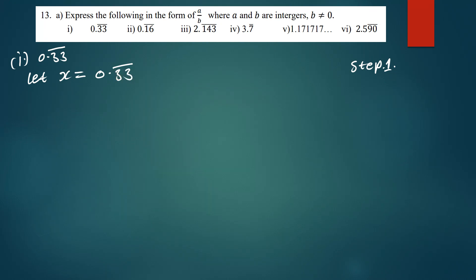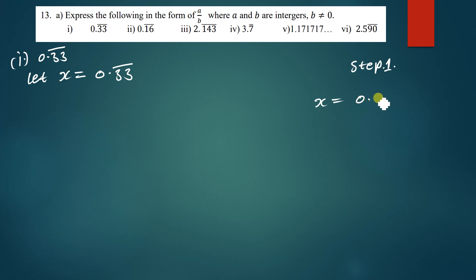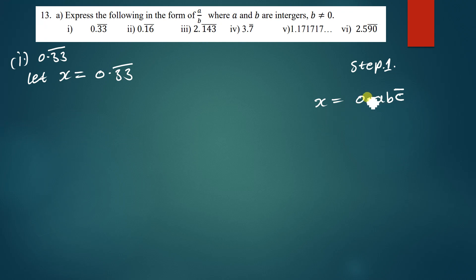Let me explain using an imaginary number. Say x = 0.abc, where c is repeating. Step one: move the decimal point closer to the repeating number. It moves two places — one, two — so you multiply the whole equation by 100. If it moves once, multiply by 10; three times, multiply by 1000.